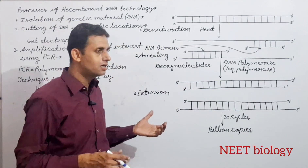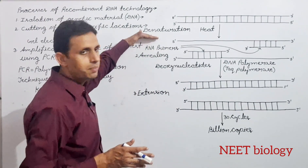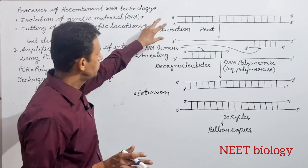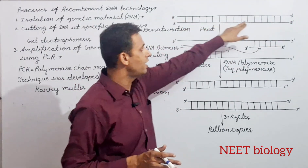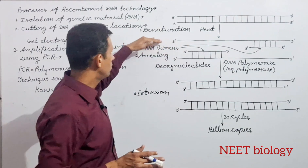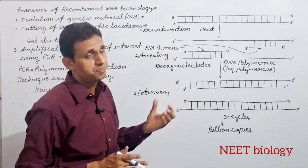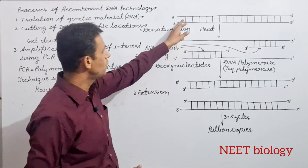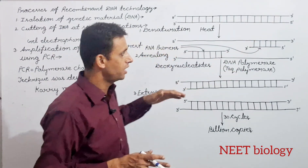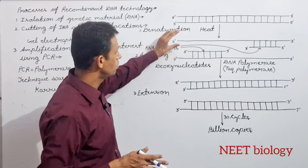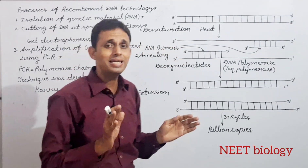PCR technique के अंदर three steps हैं। First step है denaturation। मान लीजिए यह DNA का fragment है जिसमें दो strands हैं और बीच में hydrogen bonds हैं। पहले step में culture को heat देंगे, जिससे hydrogen bonds break हो जाएंगे और दोनों strands अलग-अलग हो जाएंगे। यह है denaturation।